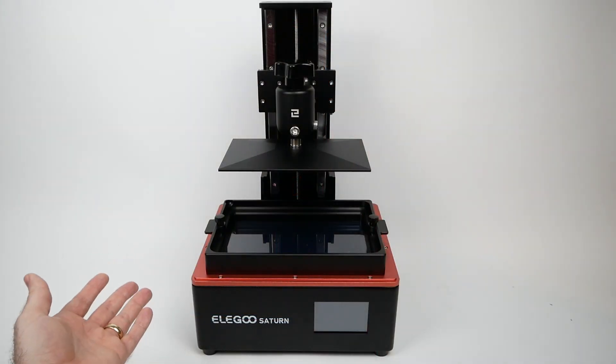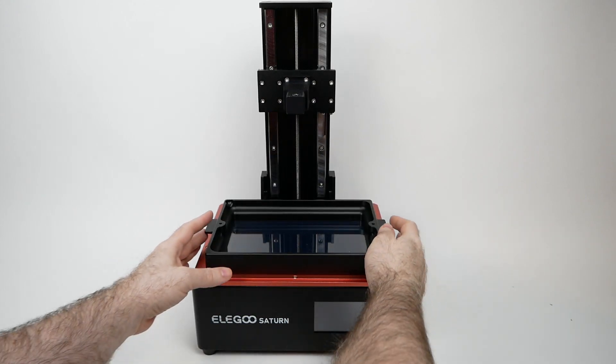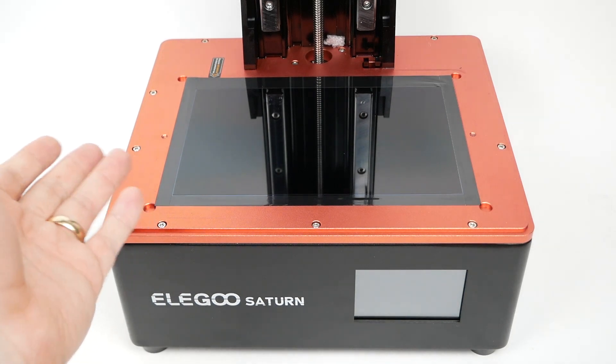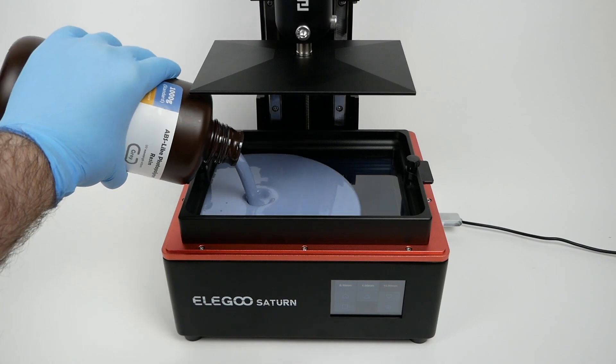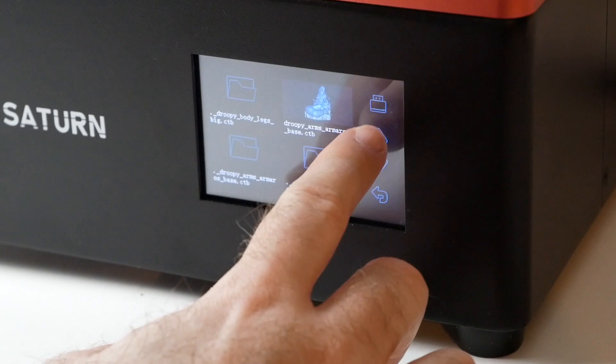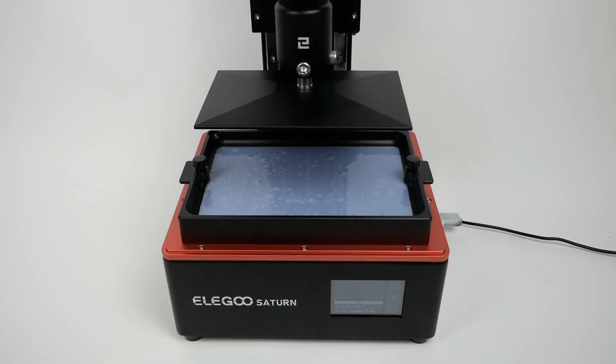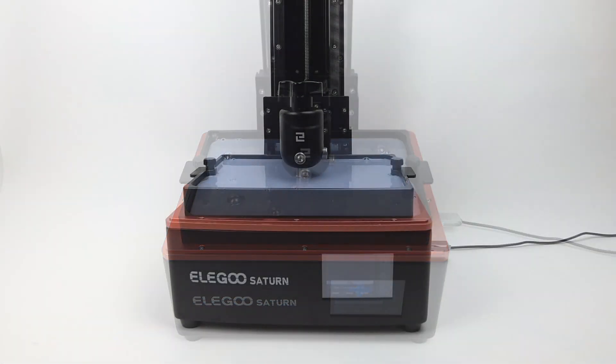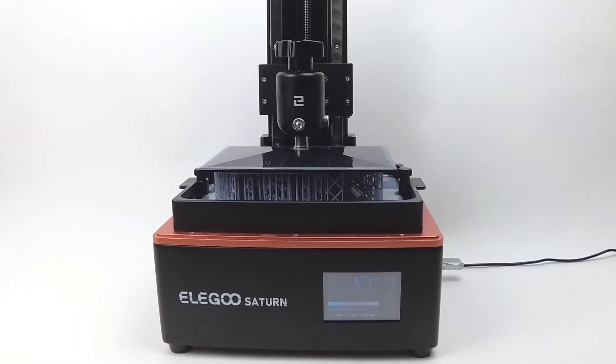The Saturn is an MSLA printer. This kind of printer uses UV-sensitive resin in a vat with transparent film on the bottom, and an LCD that selectively masks off some of the UV light being emitted from below. After putting resin in the vat, you use the touchscreen to select a model that you've already sliced on your computer and saved to a USB memory stick. When you start printing, the build platform will be lowered into the vat of resin, and the model will be built up one extremely thin layer at a time by selectively exposing the resin to UV light.